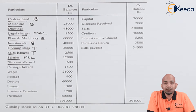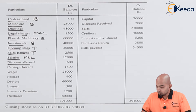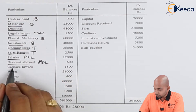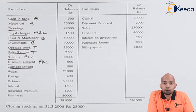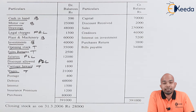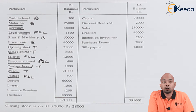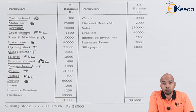Discount allowed is an expense for any organization, hence it will be a part of the debit side of the profit and loss account. Carriage inward will be a part of the trading account. Wages again are a part of the trading account. Postage will be a part of the debit side expenses, hence profit and loss. Debtors are a part of sundry assets, hence a part of the balance sheet.